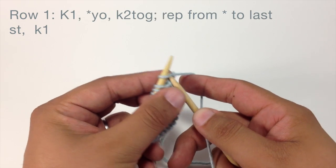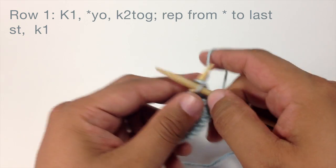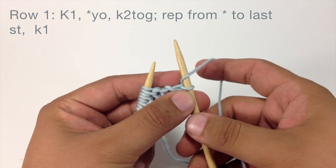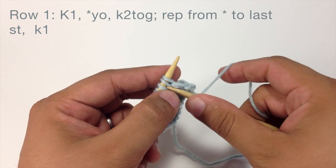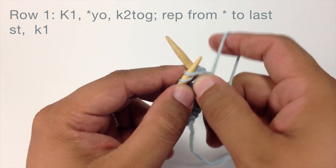Row 1. Begin by knitting one. Then we are going to start our repeat by yarning over. Then we are going to knit two together to finish our repeat.